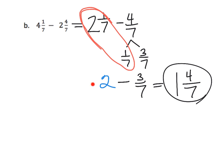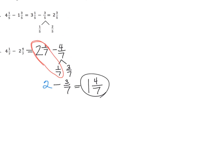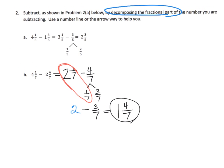Parents and teachers, you may need to walk your students through that a little bit. You might even need to draw some pictures — you could draw brownies, two brownies, and take away three-sevenths, or draw a number line and go backwards three-sevenths. That is how we decompose that second fraction in order to subtract the two numbers.